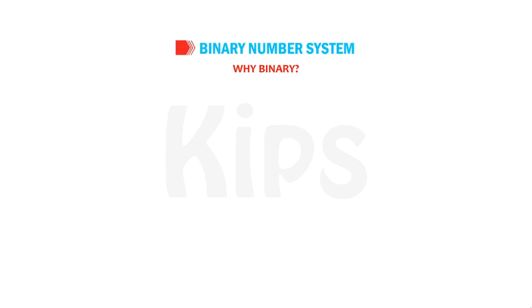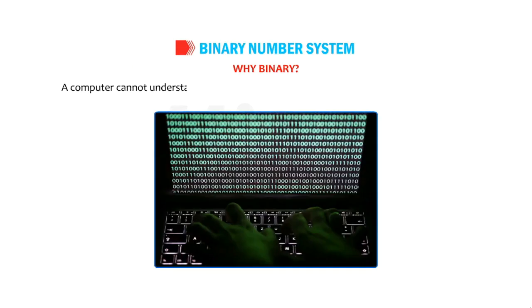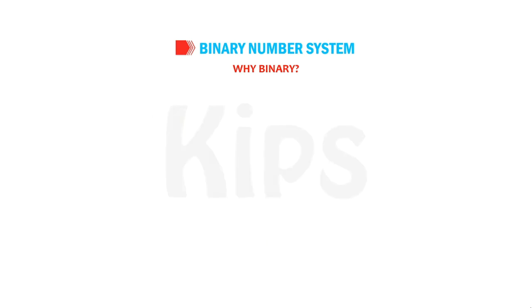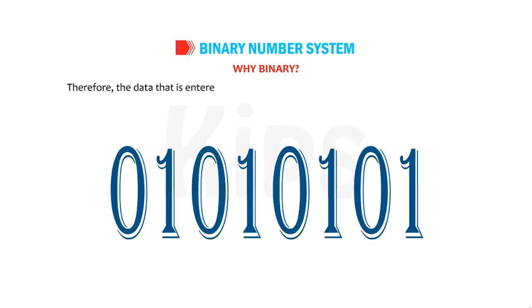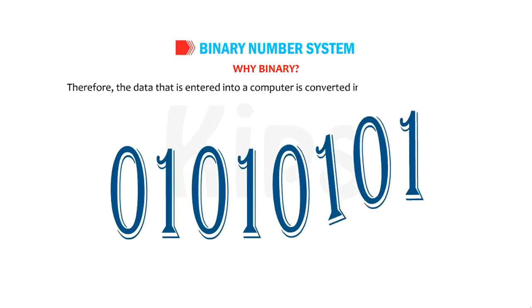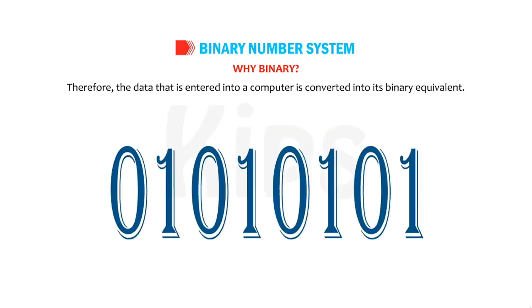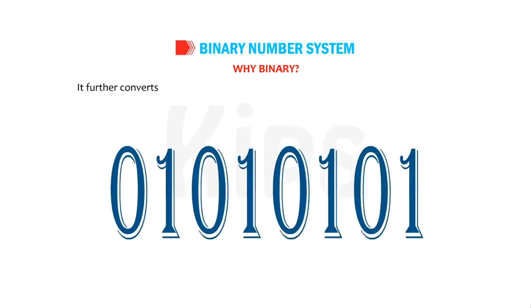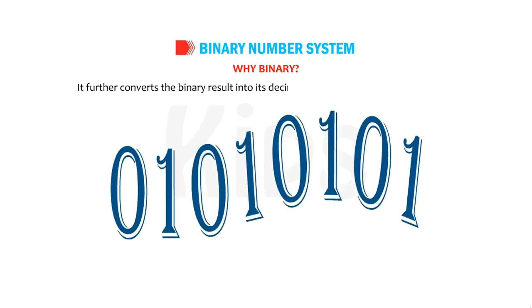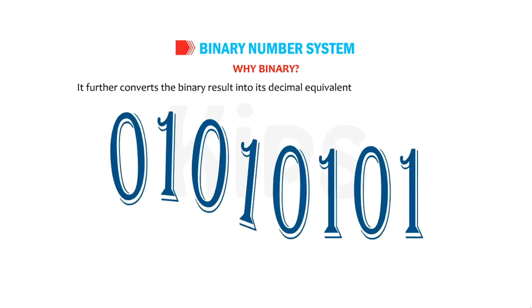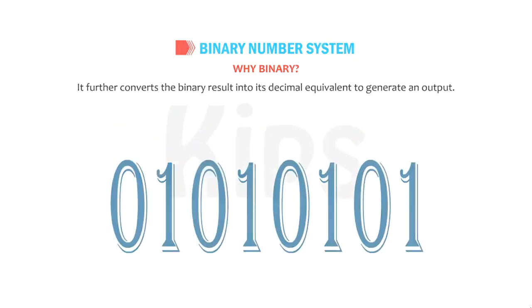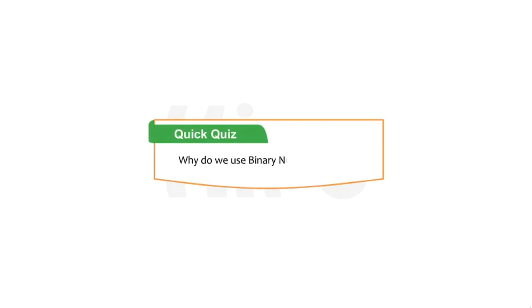Why should we use binary? A computer cannot understand human language; rather, it understands only the binary code. Therefore, the data entered into a computer is converted into its binary equivalent. It further converts the binary result into its decimal equivalent to generate an output. Why do we use the binary number system in computers?